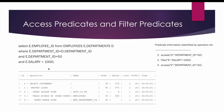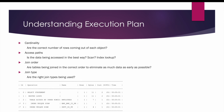We'll talk more about how to read the execution plan in the forthcoming slides. To understand the execution plan better, we should be aware of certain concepts: cardinality, access path, join order, and join types — all of which are part of the execution plan.